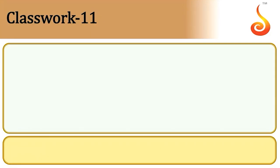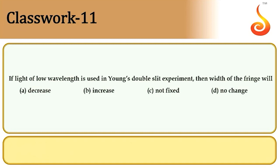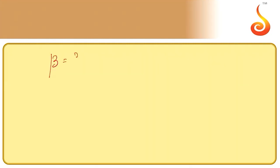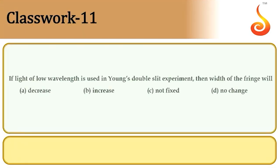A few questions based on wave optics. Example 11: If light of low wavelength is used in Young's double slit experiment, the fringe width beta = λD/d decreases as wavelength decreases. So the fringe width decreases.